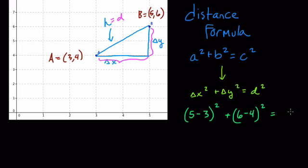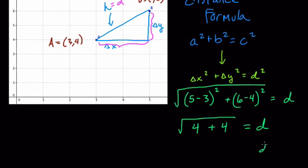But we don't want to know what d squared is. We want to know what d is. So ultimately, you're taking the square root of this sum right here. So let's do that. 5 minus 3 is 2, squared is 4. 6 minus 4 is 2, squared is 4. We add them up, and the square root of 4 plus 4 is our distance. And our distance is the square root of 8.